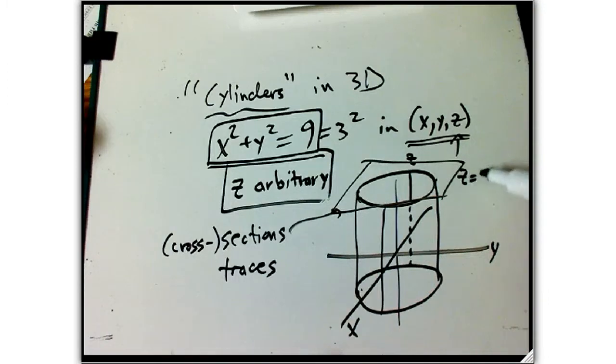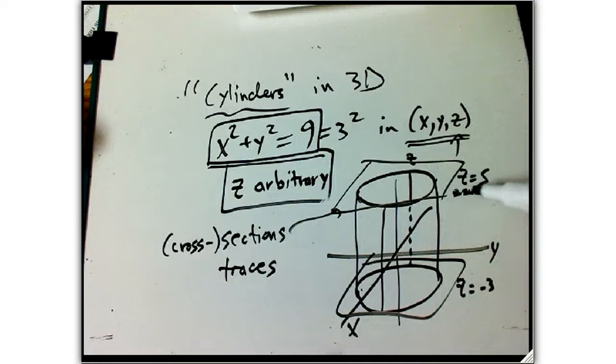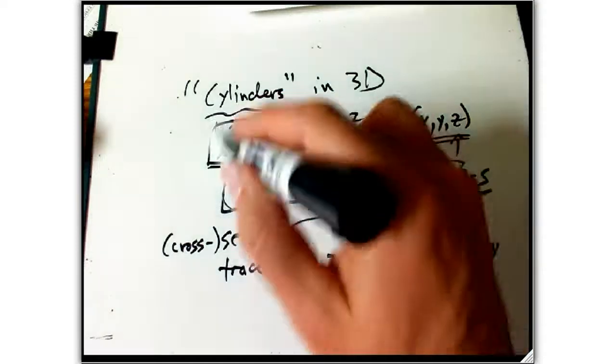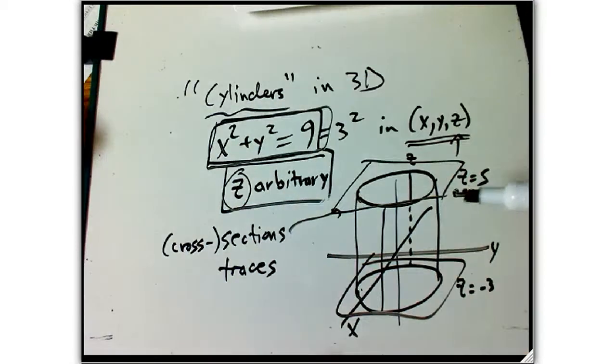Like, if you intersect with z equals 5, you get a circle here. If you intersect with z equals minus 3, you get a circle for the cylinder. Cylinders have the property that if you look, if you set the variable that's not mentioned, which is the axis variable here, if you set that to be a constant, then you're going to get just the same curve over and over again, that's what makes it a cylinder.